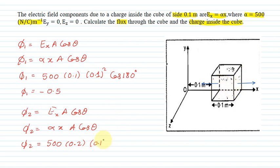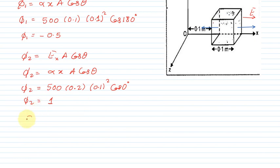It will be 500 times 0.2 times 0.1 square times cos 0 degree. Phi 2 equals 1. Net flux is phi 1 plus phi 2, which is minus 0.5 plus 1, equals 0.5 Newton meter square per coulomb.